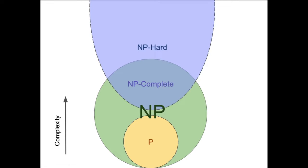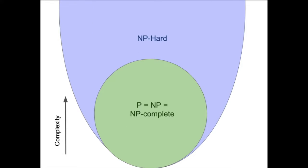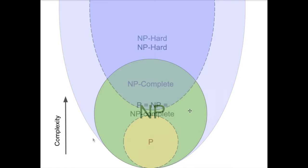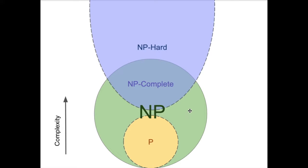If P equals NP, then the diagram would look different: P encompasses the whole NP circle, and all NP-complete problems are in NP, so they're also in that circle, and all of them would be in NP-hard as well. But in reality, we don't know where this boundary lies — we don't know if this extends all the way down or all the way up.